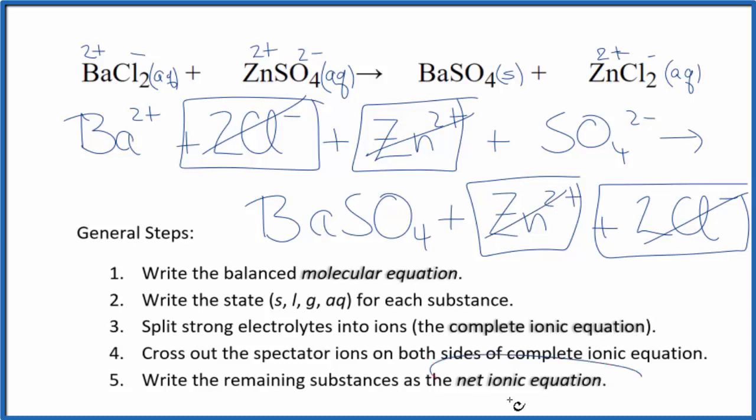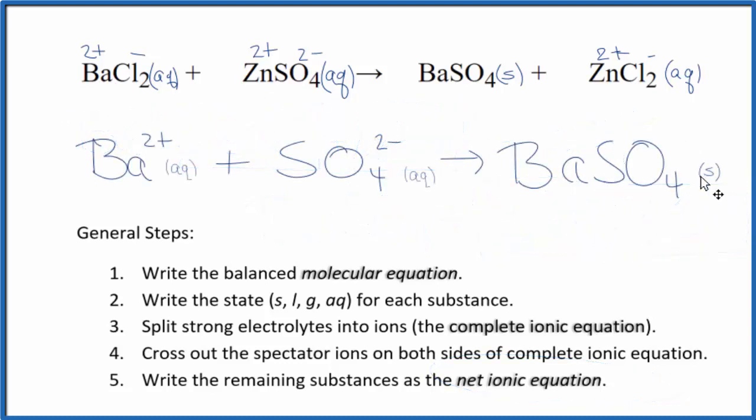And what's left, that's the net ionic equation for BaCl2 plus ZnSO4. I'll clean this up, and we'll write the states in and have our net ionic equation. So this is the balanced net ionic equation for barium chloride plus zinc sulfate.